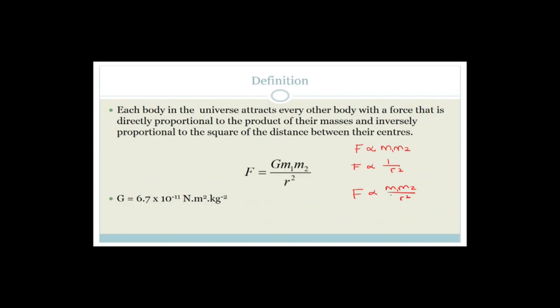If this ratio went up, force would go up; if it went down, force would go down. A man called Lord Cavendish did hundreds of experiments and eventually worked out the universal gravitational constant G. Both this formula and the constant 6.7 × 10⁻¹¹ are on your formula sheet, so you don't have to memorize this at all.